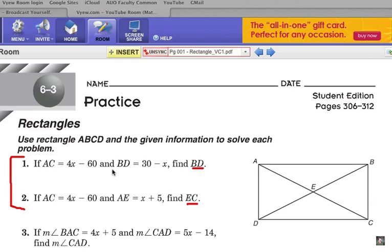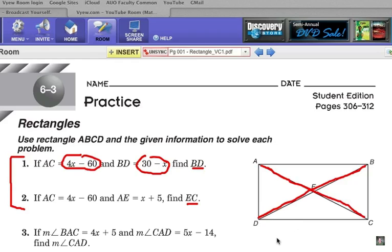Alright, AC is 4x minus 60. So, let's think about that. That is the length of AC right here, that diagonal. And BD is 30 minus x. And that's the other diagonal. What do you know about the lengths of the rectangles' diagonals? Yes, they are the same length, aren't they? Alright, so we can make an equation and solve for x.